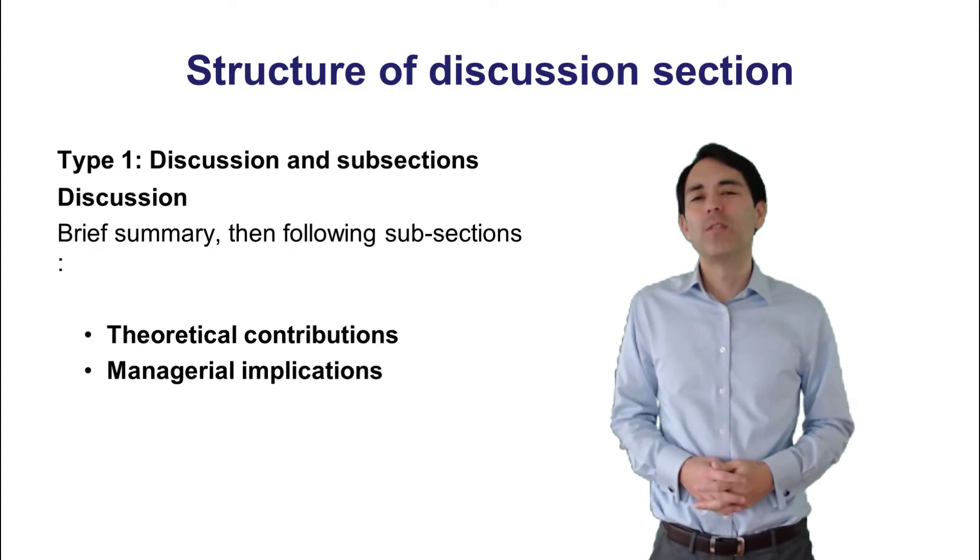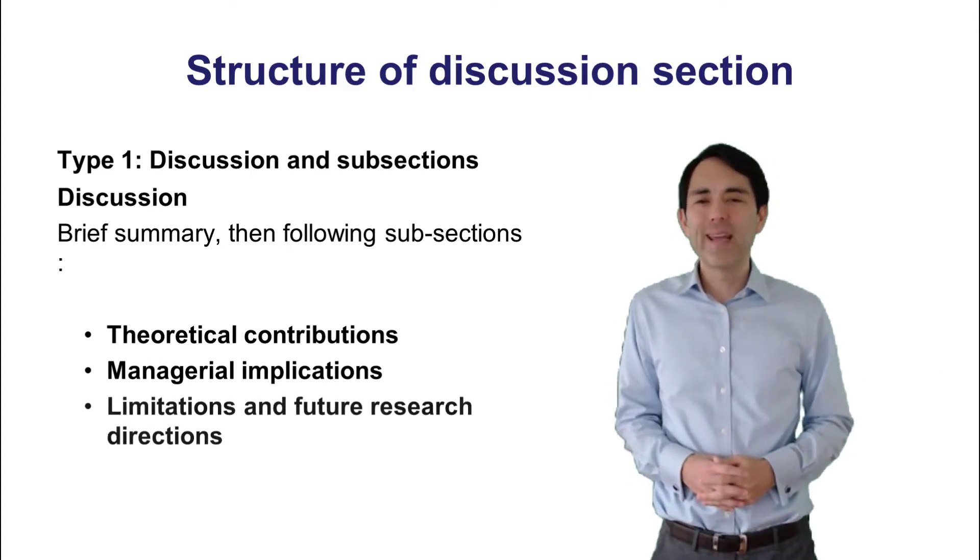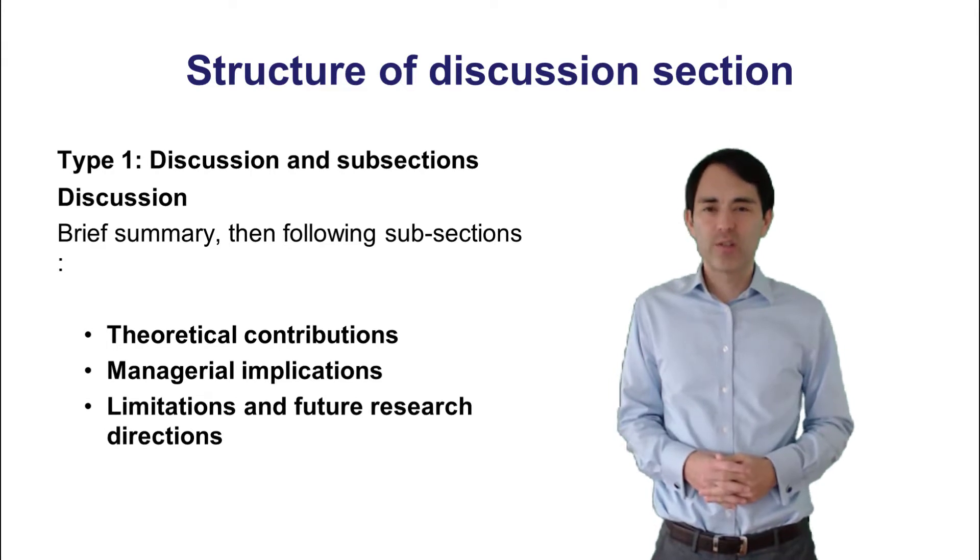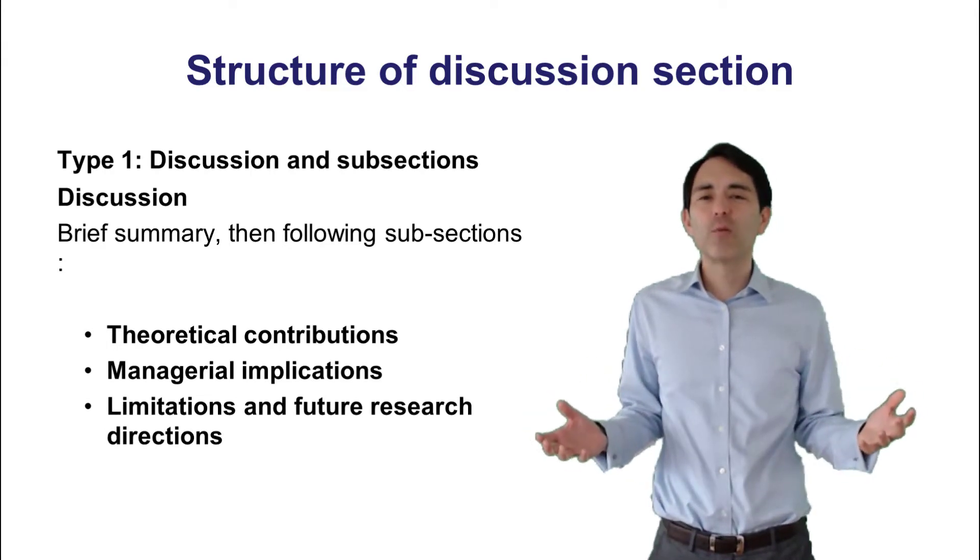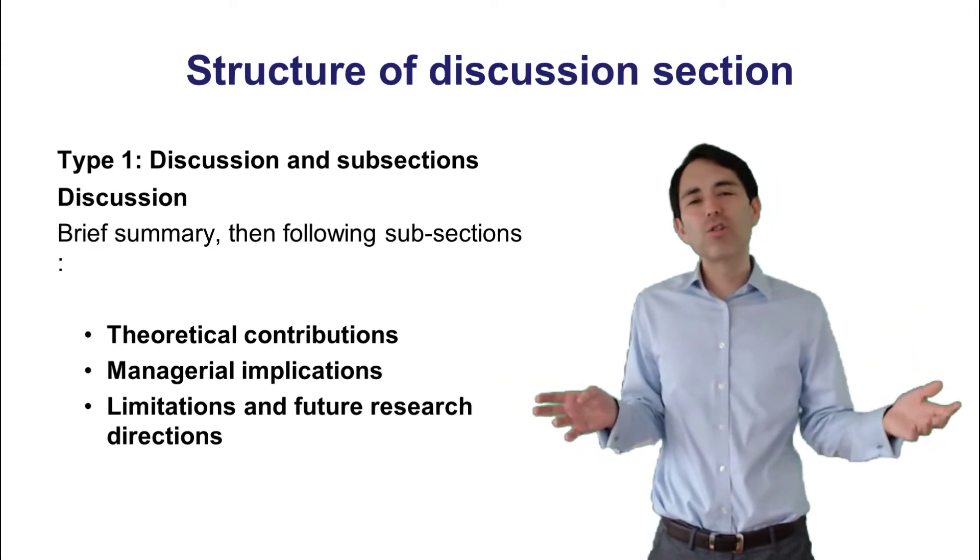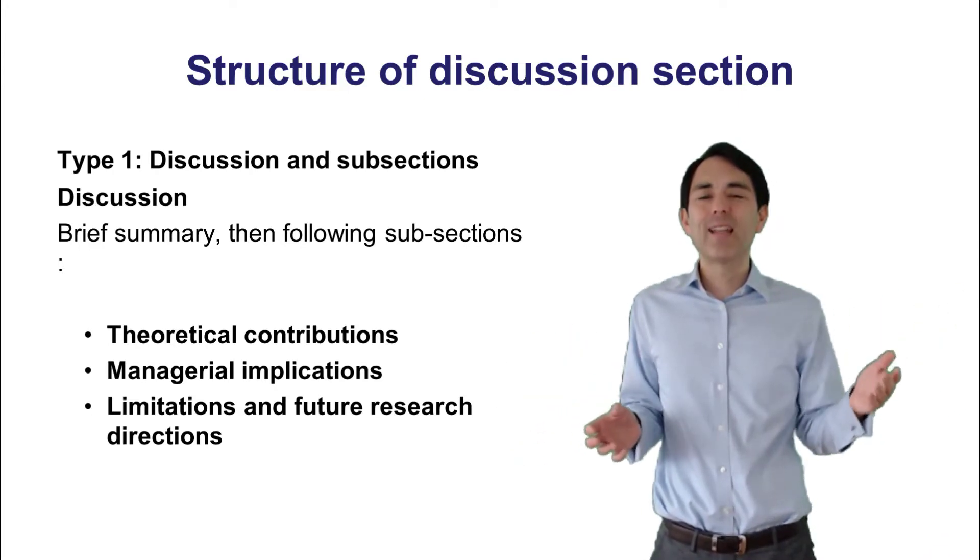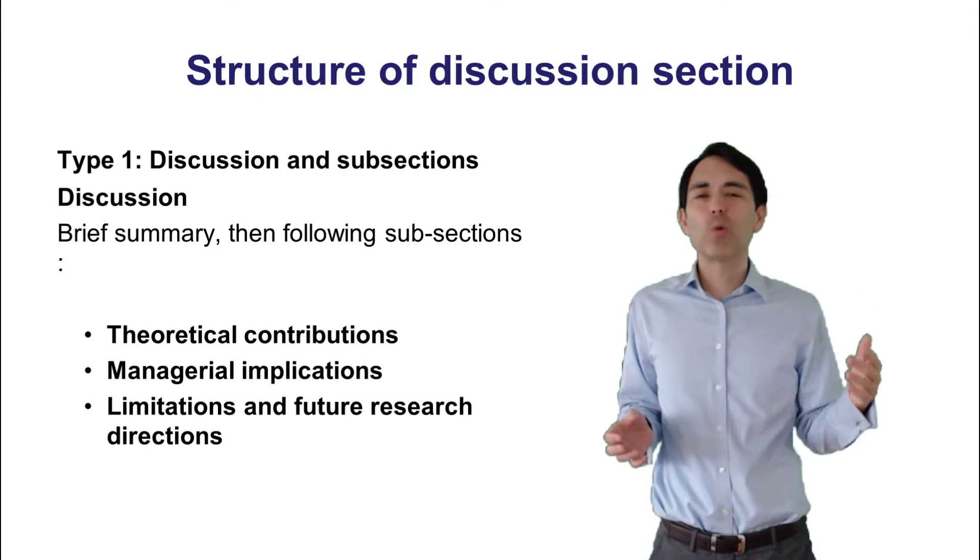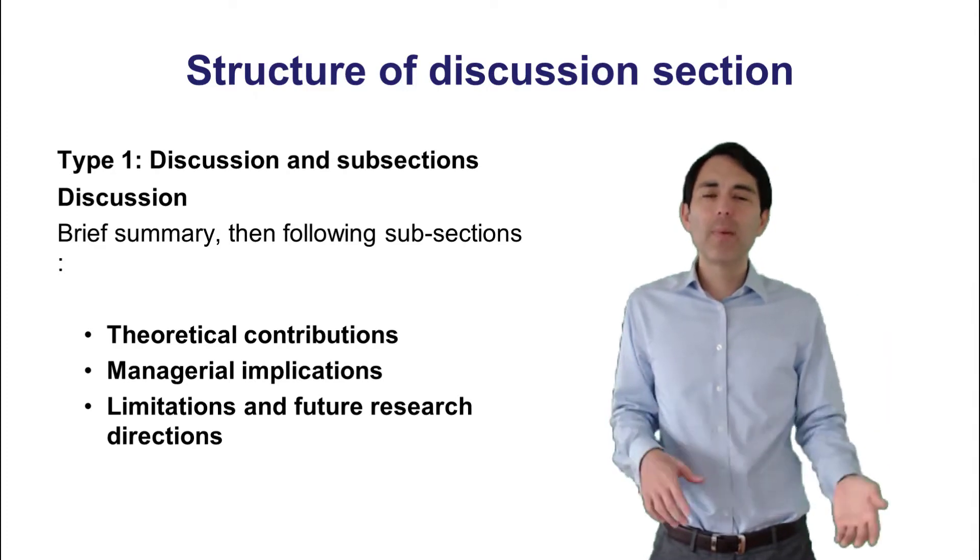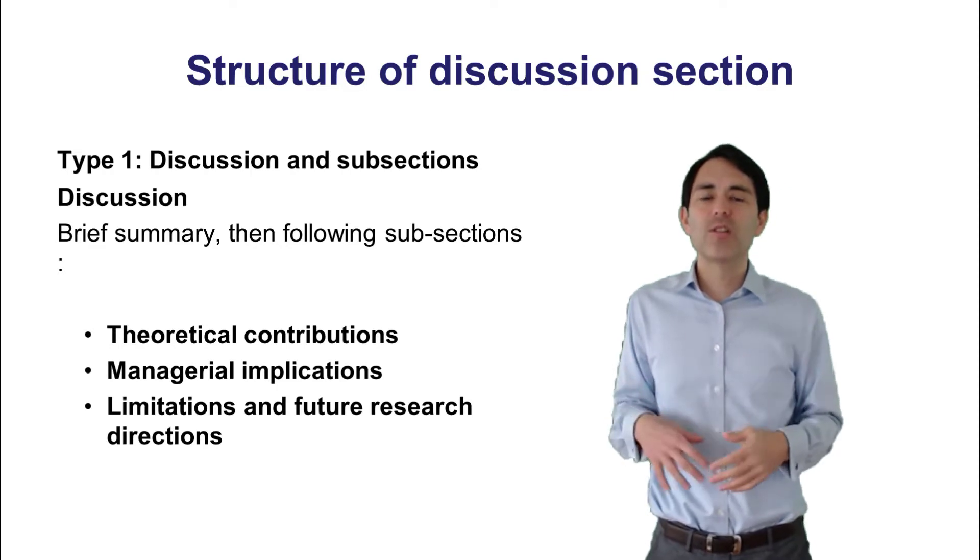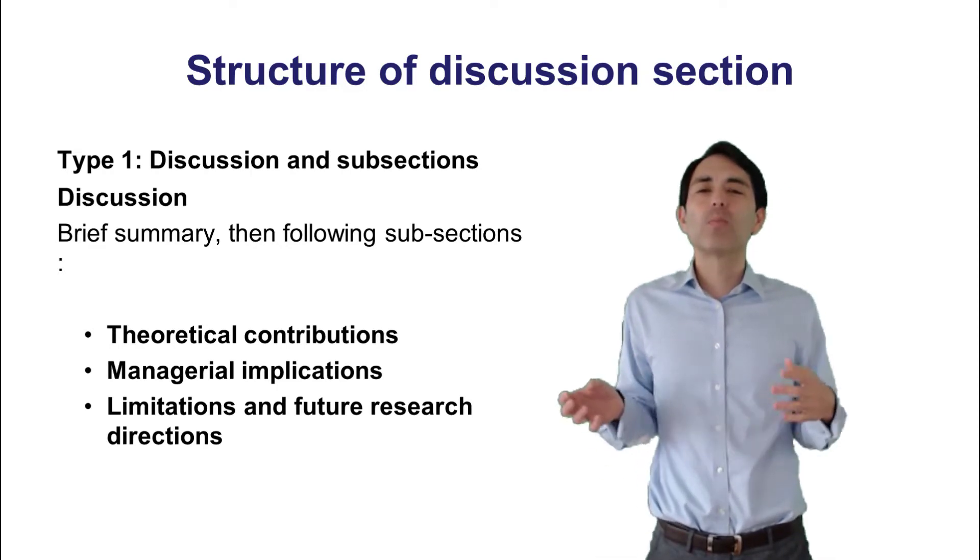And then you have the next subsection on limitations and future research directions. There you would start with this, study has certain limitations, most studies have certain limitations. And then you would also somewhat justify or defend these limitations. And based on the existing limitations in your study, you would also propose ideas for future research.